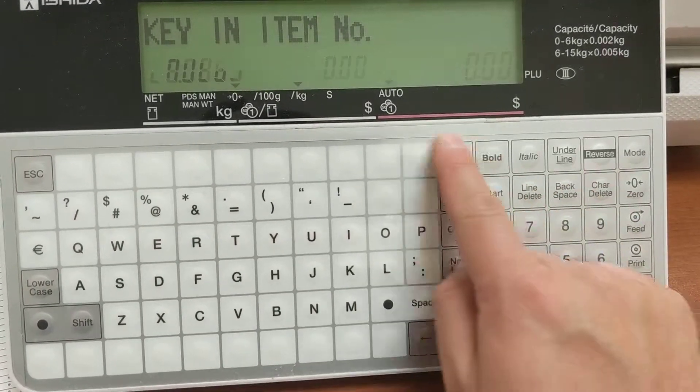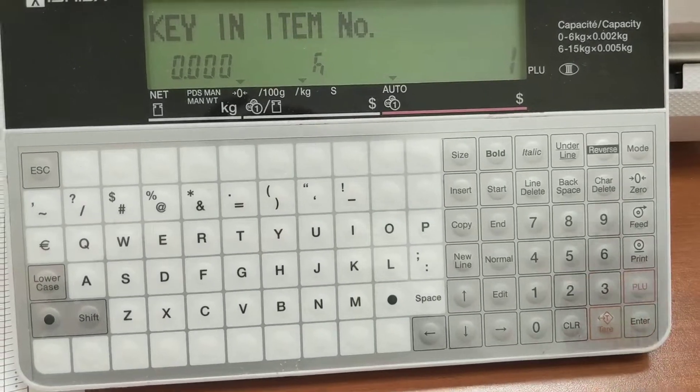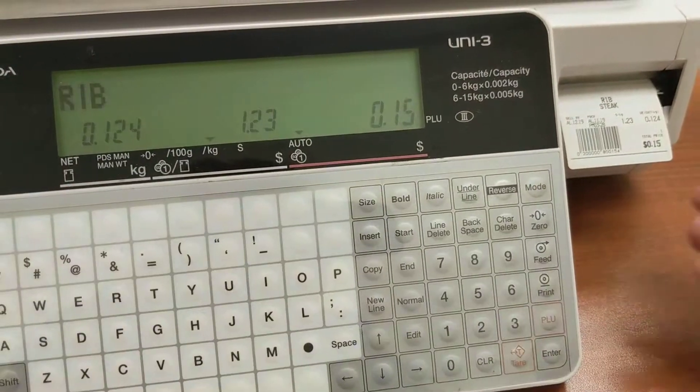Now when I touch this key, the triangle is on auto mode. So if I call up an item, 1PLU, put something on my scale, it prints.